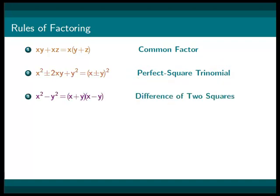x squared minus y squared equals x plus y times x minus y, the difference of two squares.